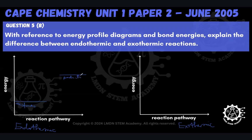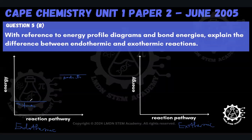In any reaction, in order for all reactants to be converted to product, there needs to be a breaking of the bonds in those reactants. That process is an endothermic process, so I show my arrow going up. That upward arrow represents the bond breaking of all of the bonds that are in the reactants.